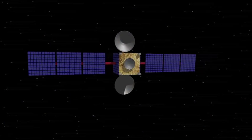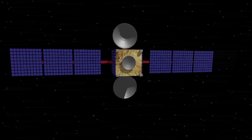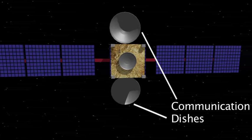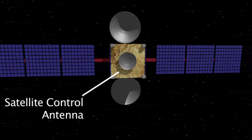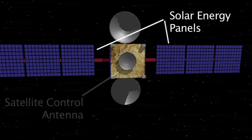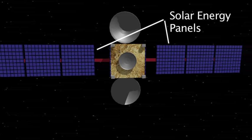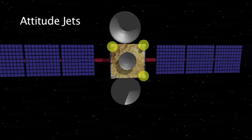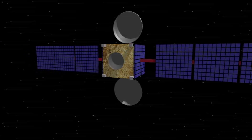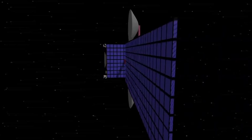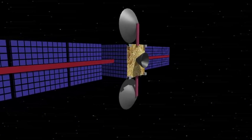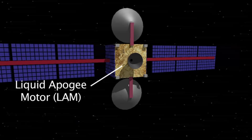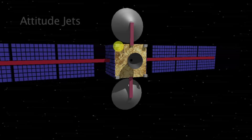Once a satellite is in its geosynchronous orbit, the solar panels are deployed and the antennae are moved into position. The liquid apogee motor is used to place the satellite in its geosynchronous orbit after it's been released from its rocket.